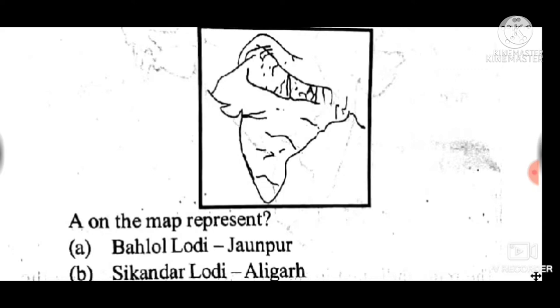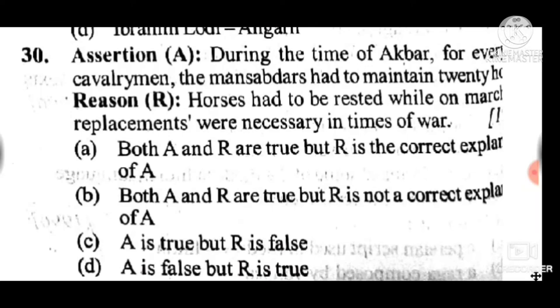Question 30: During the time of Akbar, for every contingent, the Mansabdar had to maintain 20 horses. Horses had to be rested while on march and replacements were necessary in time of war. Answer is D — A is false but R is true.